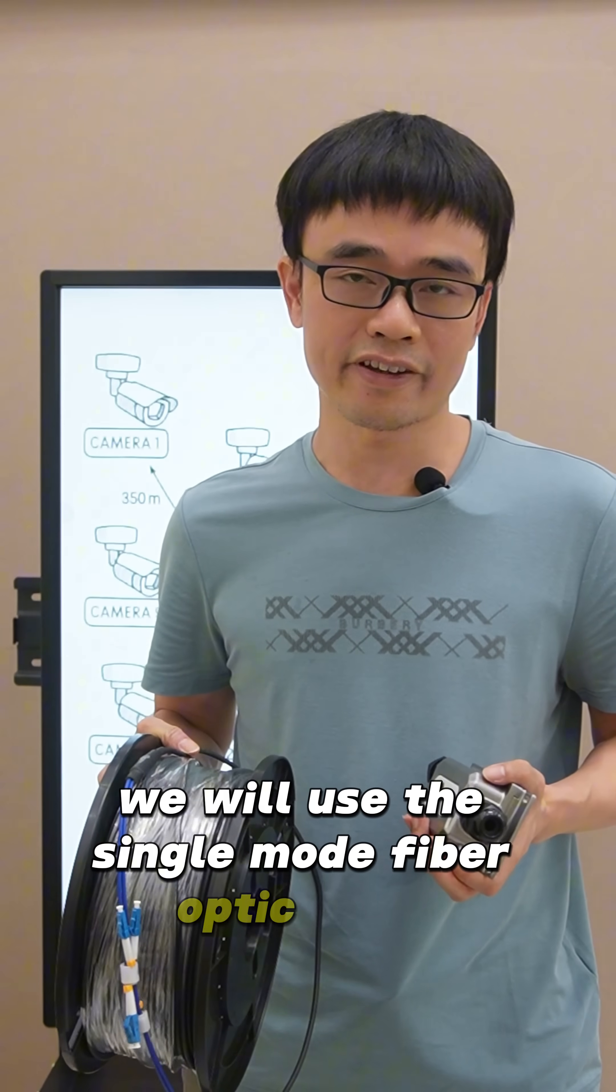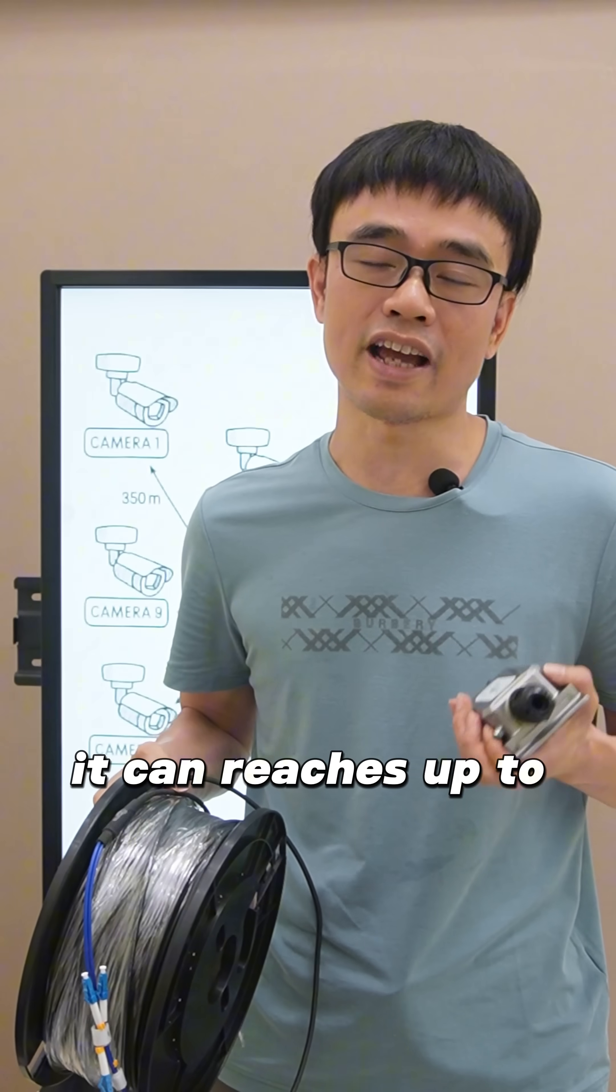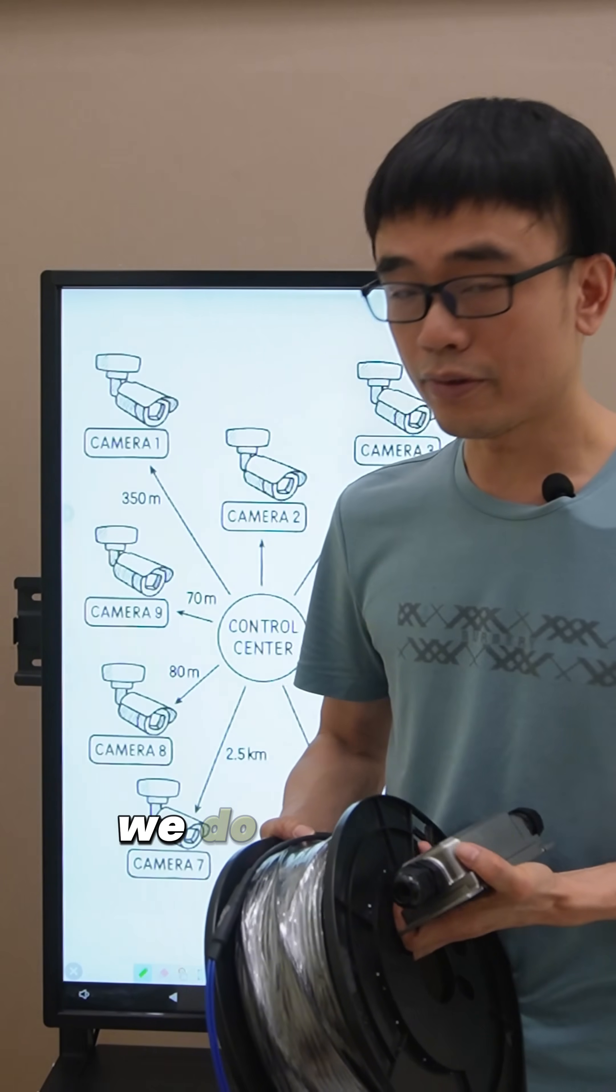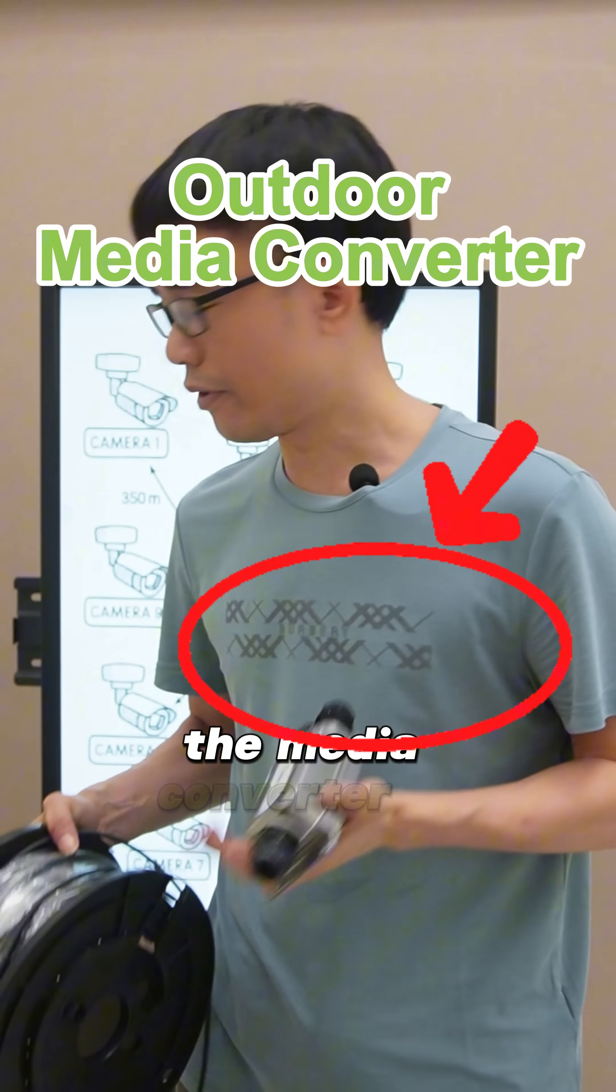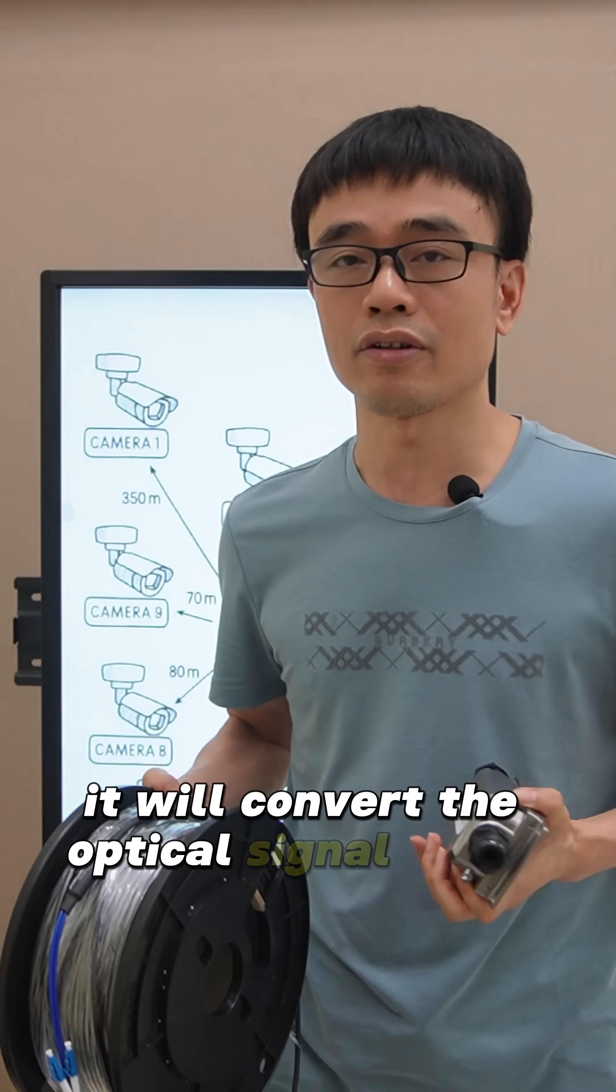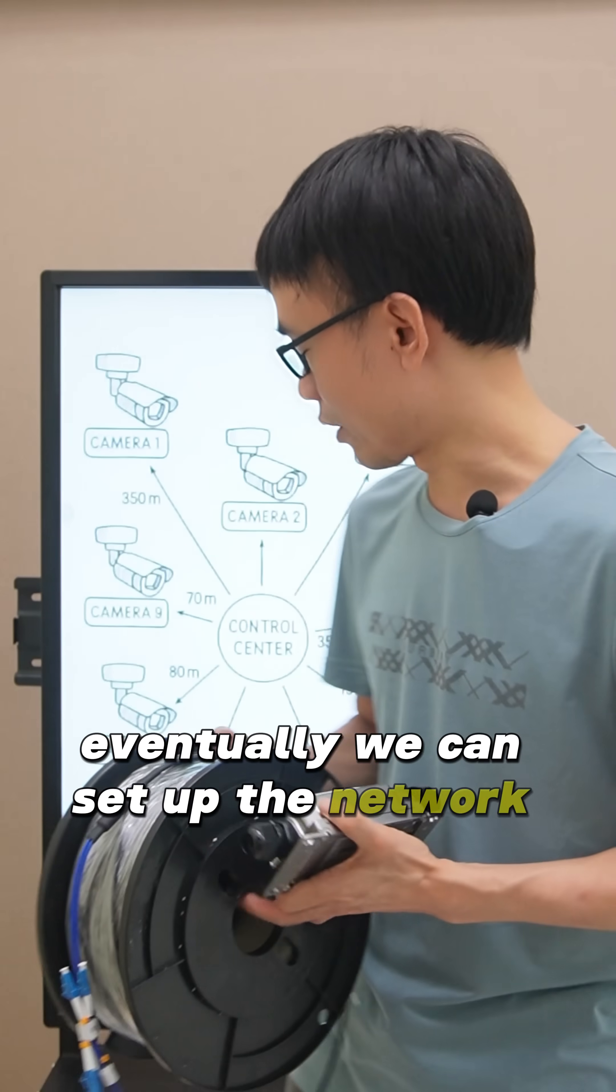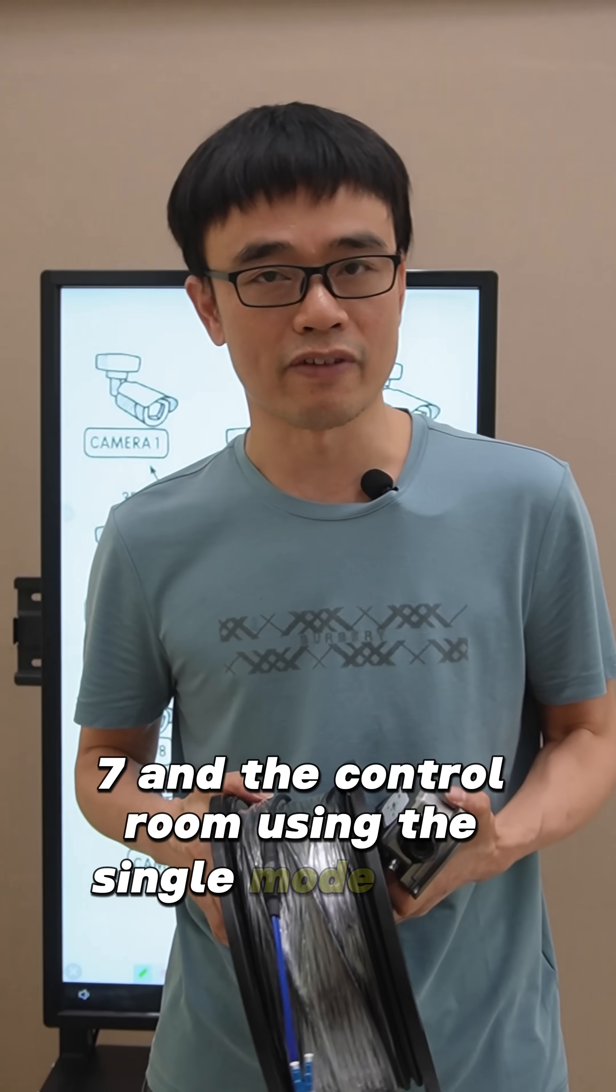We will use the single-mode fiber optic cable. There's no need to concern about the distance. It can reach up to 10 kilometers between the control room and the cameras. We do need one more device. It's called an outdoor media converter. The media converter is supposed to sit next to camera number 7. It will convert the optical signal to the electrical signal. Eventually, we can set up the network connectivity between camera 7 and the control room using the single-mode fiber optic cable.